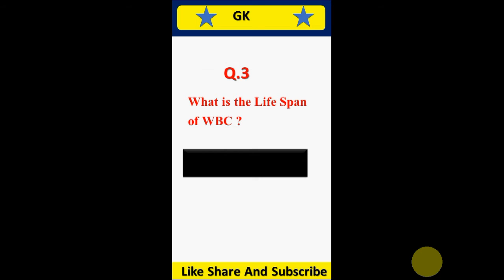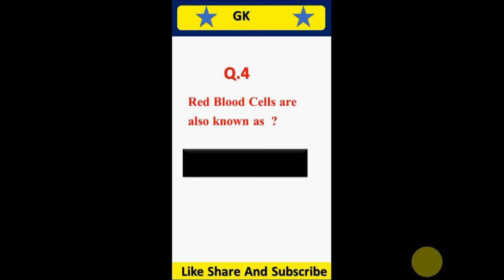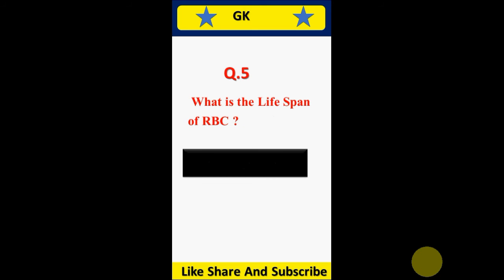Question number 3: What is the lifespan of WBC? 10 to 15 days. Question number 4: Red blood cells are also known as? Erythrocytes. Question number 5: What is the lifespan of RBC? 120 days.